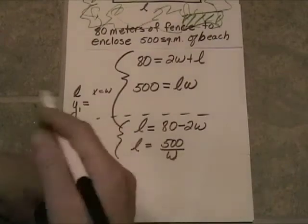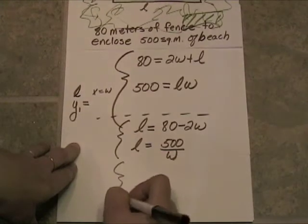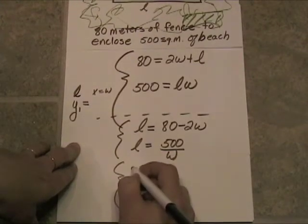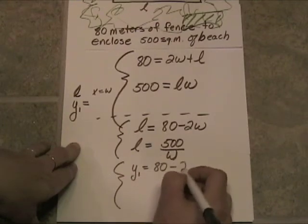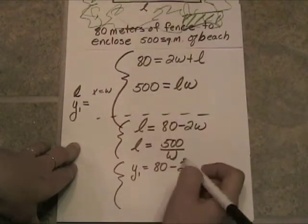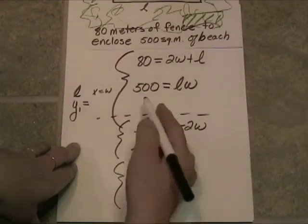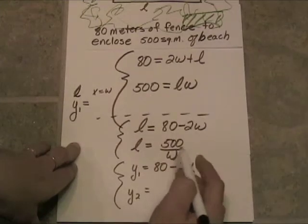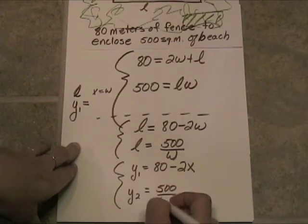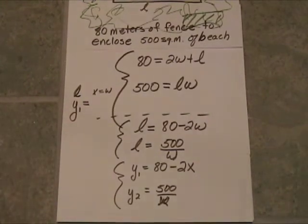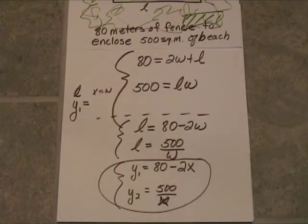But again, the graphing calculator is going to want things in terms of Y equals. So let's go ahead and rewrite this system as, Y sub 1 is going to be equal to 80 minus 2X. Then Y sub 2 is going to be equal to 500 divided by X. Again, all I've done is substitute X and Y for L and W. And now we can put these two equations very nicely into our graphing calculator.